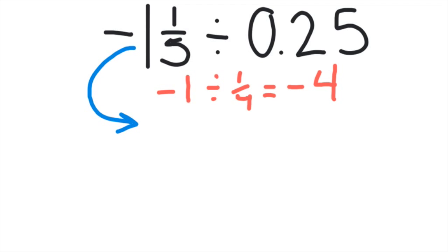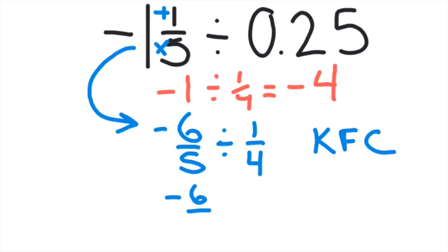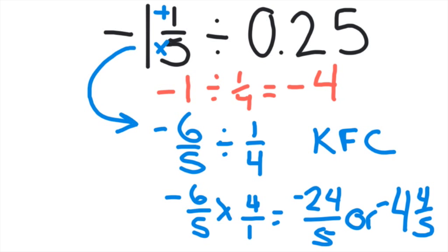We can't use this mixed number. We need to change it to an improper fraction. So -1⅕ is -6/5. And we divide that by ¼. So we change 0.25 to ¼. Remember, to divide fractions, you need to multiply by the reciprocal, or KFC, which means keep the first fraction, flip the second one, and change divide to multiply. And then you multiply. The numerators become -24. The denominator becomes 5. Then you simplify it because this is an improper fraction to -4⅘.